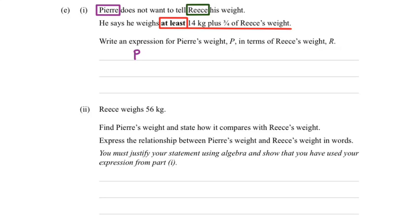So Pierre, which is P, should equal 14 kgs plus 3 quarters multiplied by Rhys' weight. Now Rhys' weight, in this case, we've set it to be R.